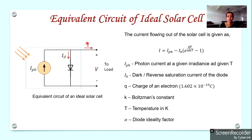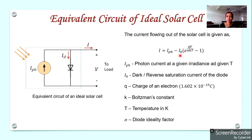We can write the equation for output current I as: I = IPH − ID. The diode current ID is given by the general diode equation: ID = I0 × (e^(QV / αKT) − 1). Here, I0 is the reverse saturation current of the diode, also called the dark current.